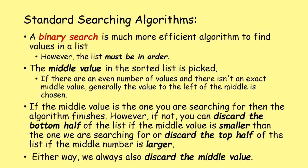The next one is binary search, which is a much more efficient algorithm. However, with a binary search the list must be in order. We start by looking at the middle value in a sorted list. If there are an even number of values and there isn't an exact middle, generally the value to the left is chosen - you round down. If the middle value is the one you're searching for, the algorithm finishes.